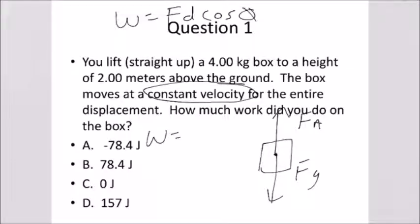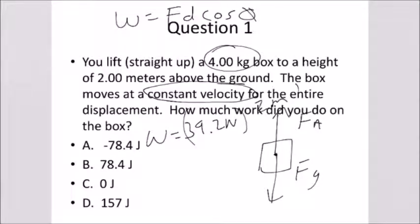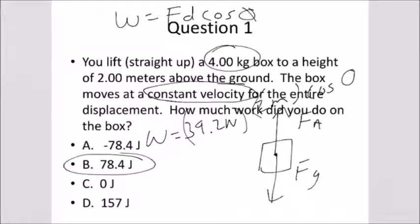So work equals the force. The force here has to be the weight, not the mass. Take four kilograms times 9.81 meters per second squared, giving a force of 39.2 newtons up. The box moves a distance of two meters, also up, times the cosine of zero. Cosine of zero is one. So 39.2 times two times cosine of zero gives a work done of 78.4 joules, and it's positive because the cosine of zero is positive one. The work you're doing is in the same direction of motion.